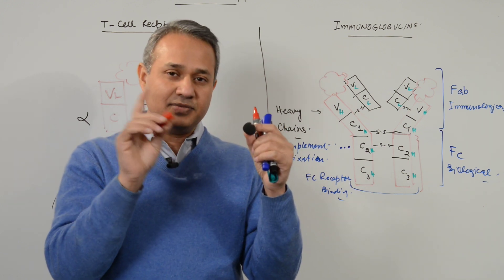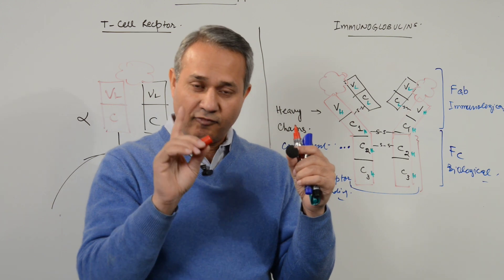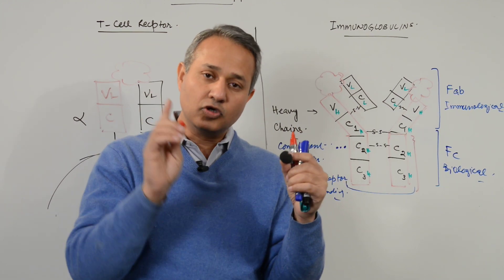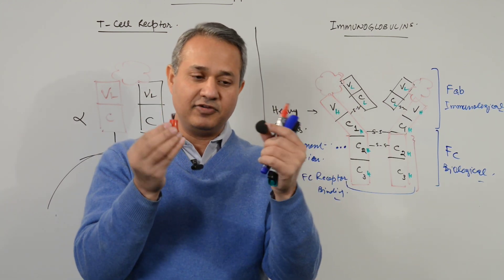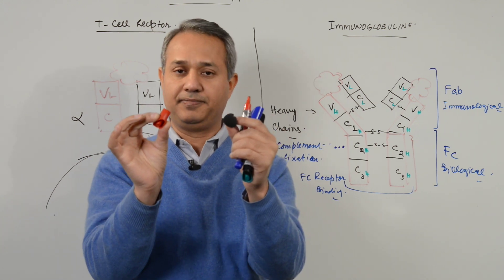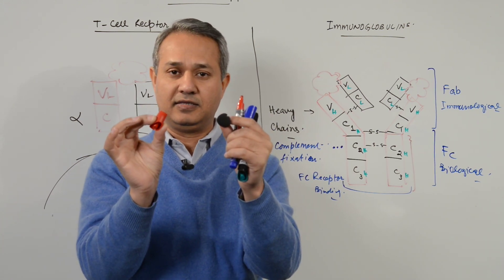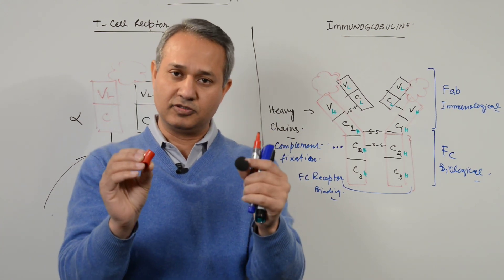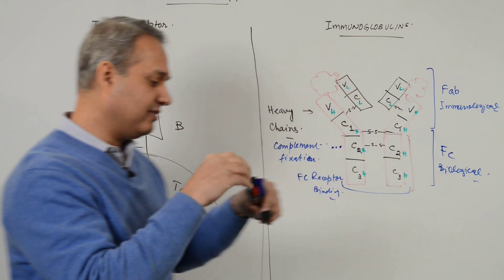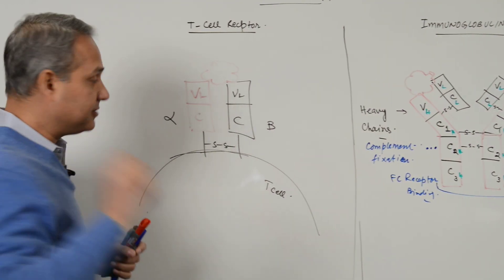One B cell cannot produce immunoglobulins which can combine with both antigens — that is not going to happen. Please keep that in mind when we talk about immunoglobulin.